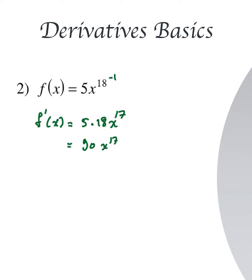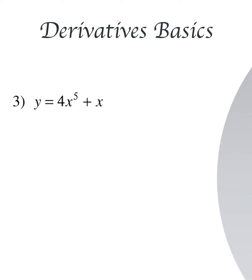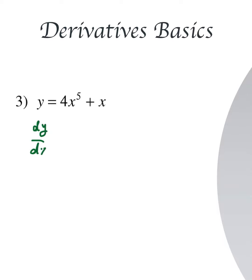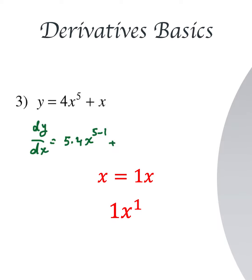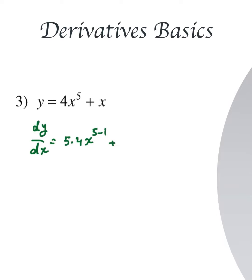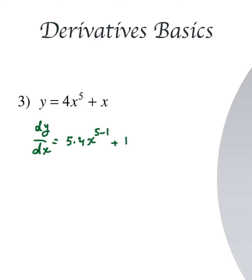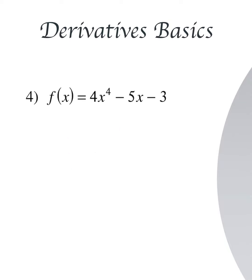Next we have y equal to 4x^5 plus x. Remember that when we have x alone it means 1x, so 1x to the power 1. Taking the derivative dy/dx: we drop down the 5 and multiply by 4, giving 5 times 4 x to the power 4. For the x term, since it's in the form ax, the derivative is just a, which is 1. So the final answer is dy/dx = 20x^4 + 1.